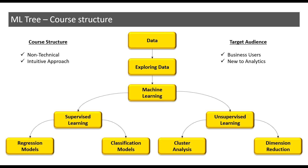After data exploration is done, the data is ready for machine learning. There are two types of machine learning, or two branches within machine learning: one is supervised learning and the other one is unsupervised learning. Within supervised learning, there are two further sub-branches — one is regression models and the other being classification models. Within unsupervised learning, there are again two branches: one is called cluster analysis and the other one is dimension reduction. Every node in this ML tree diagram will be a chapter of its own and will be explained in greater detail.